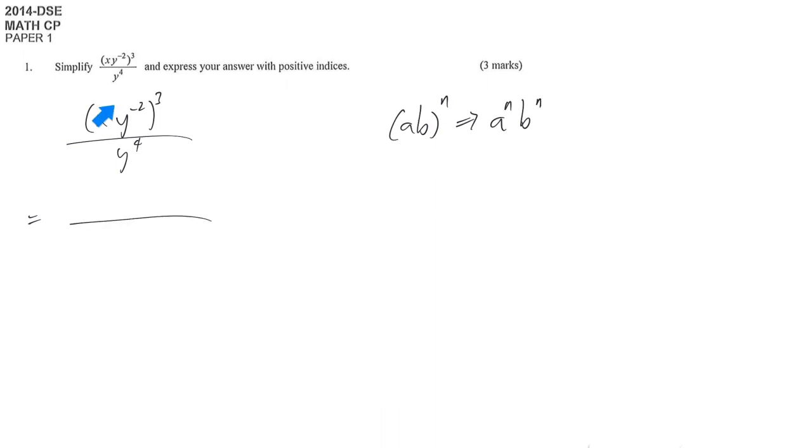So therefore, in the numerator, we have two factors inside. Each factor should have power of 3. The first item is x, while the second item is y power of negative 2.